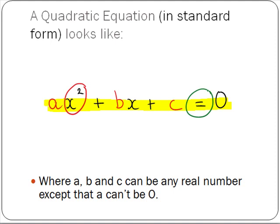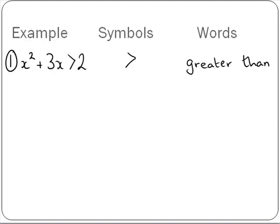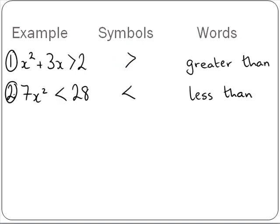So sometimes we need to solve quadratic inequalities like these. In the first example, it reads x squared plus 3x is greater than 2, and the symbol here is greater than. In the second example, 7x squared less than 28, the symbol is less than.